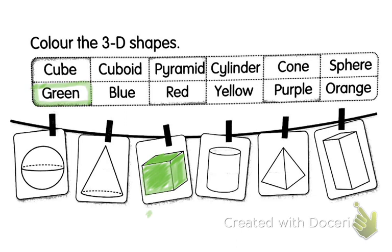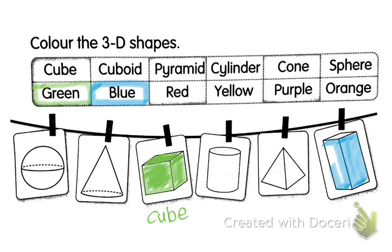Cube. Next one is cuboid. Cuboid is blue. It's most likely like a cube. Which one is cuboid? Yes, this one is cuboid. It's almost the same as a cube, but has long parts.